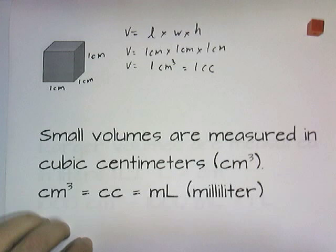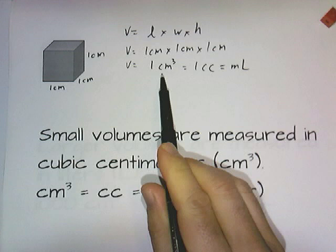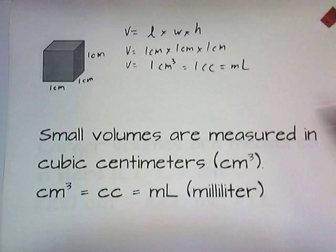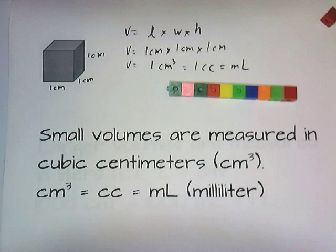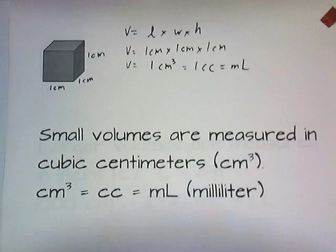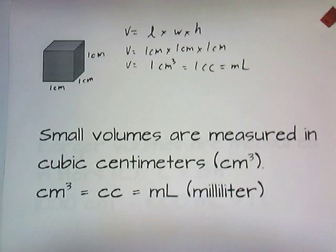Instead of writing cubic centimeters, we sometimes write cc's. A cubic centimeter is the same as a milliliter, and you just have to know that cubic centimeters, cc's, and mL's all mean the same thing. In medical shows, if you see the doctor yell 'give him ten cc's of adrenaline' — that's what the cc's mean: cubic centimeters. Syringes are measured in cubic centimeters. Here's a graduated cylinder filled up with ten cubic centimeters of water — that's how much ten cubic centimeters of water looks like.